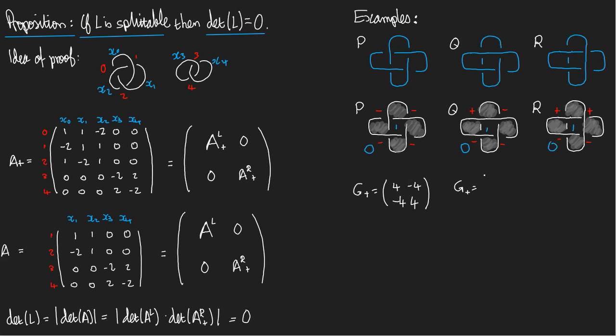G-plus is given by 2, minus 2, minus 2, 2. And here, G-plus is given by... well, let me say something about this. What's the sum of the signs around region 0? Well, it's 0. What's the sum of the signs where region 0 and 1 meet? It's 0. So actually, in this case, G-plus is 0.